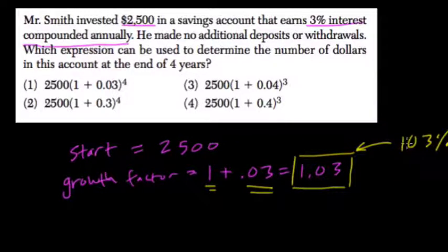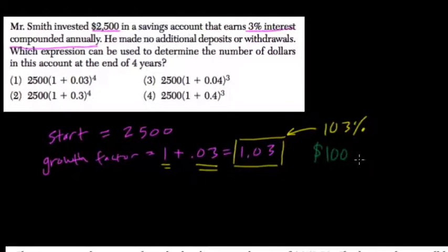And you can calculate this with a simple value to convince yourself that this is true. If you have $100 and I say add 3% to that, you would add $3. 3% of 100 is $3. But put this together and you have 103.